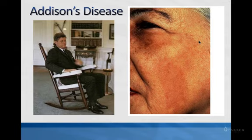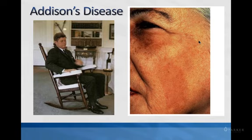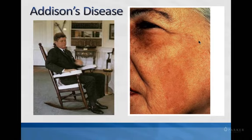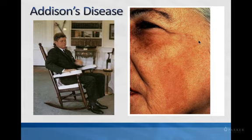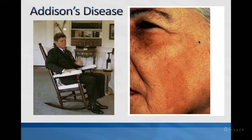They also have hypoglycemia because of the lack of cortisol — cortisol allows you to maintain glucose metabolism, and without it they can be hypoglycemic. Addison's disease is relatively easily treated: patients have to receive lifelong administration of both aldosterone and cortisol, simply replacing the hormones their body can no longer make.